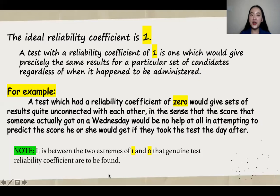Take note that the ideal reliability coefficient is one. A test with a reliability coefficient of one is one which would give precisely the same results for a particular set of candidates regardless of when it happened to be administered.